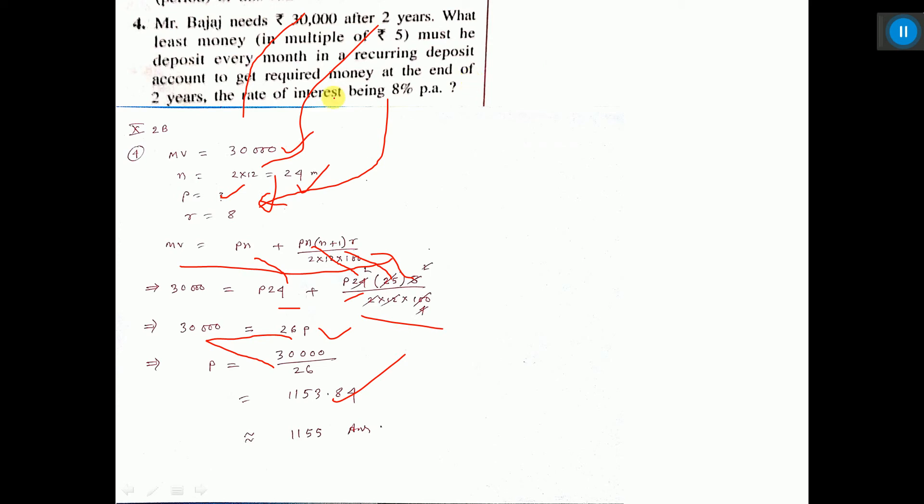But in the question it is told what is the least money in multiple of 5. Multiple of 5 means the last digit should be 5 or 0. So near 3, which one is coming, 0 or 5? 0 is 3 away and 5 is 2 away. So we should take this 5, so 1,155 is the answer. See the sign I have given, approximately equal to. So this is the answer.